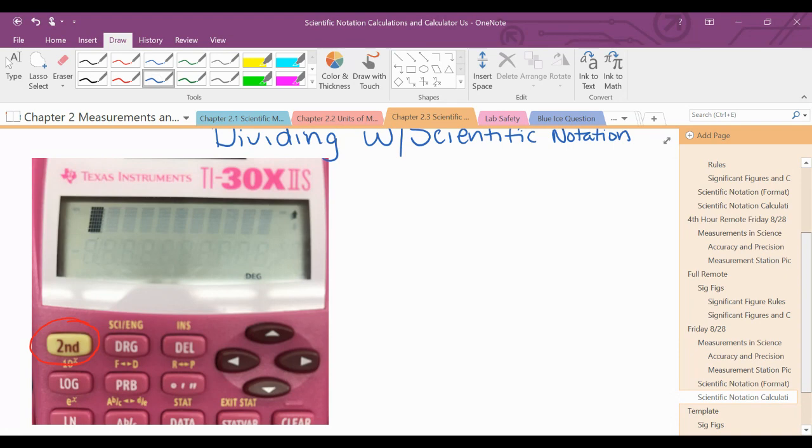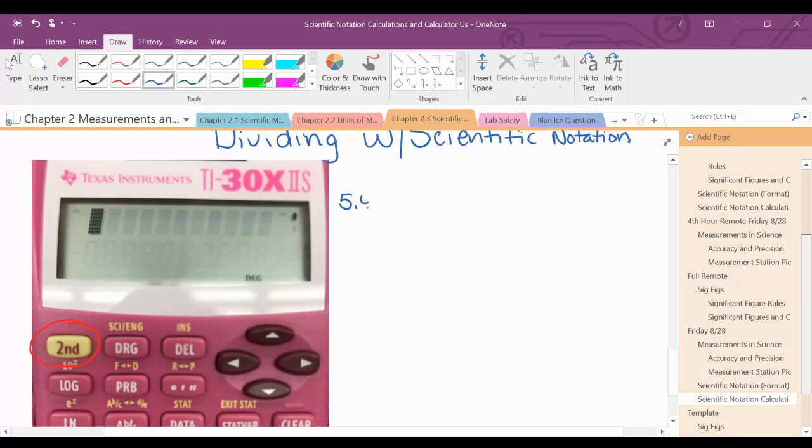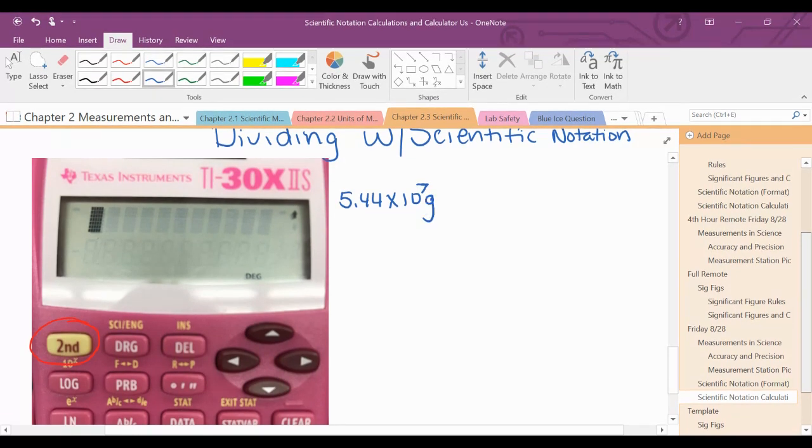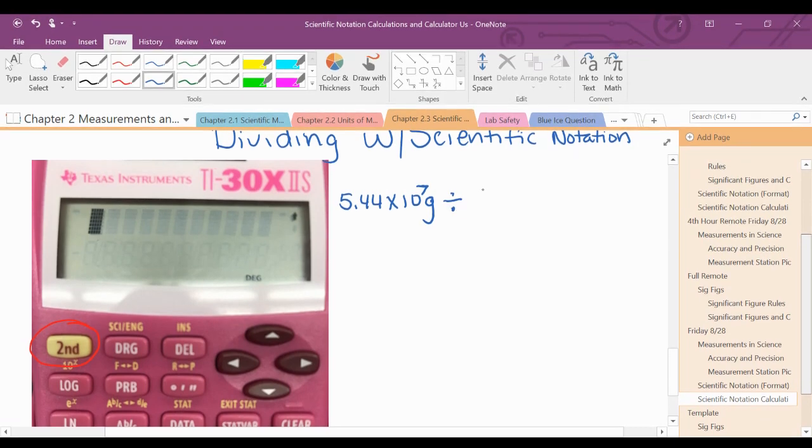I have 5.44 times 10 to the 7th grams, divided by 8.1 times 10 to the 4th moles.